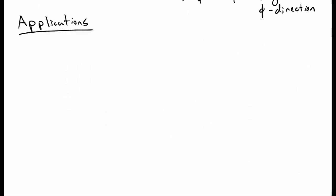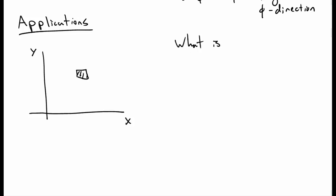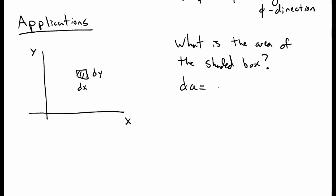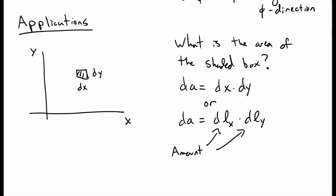Let's apply this to an example to see why you would care about such a thing. Consider the area of this small infinitesimally small shaded box. The area dA, if the box has height dy and length dx, is of course dx times dy. I'm going to write that as dl_x times dl_y — a little bit of length in the x direction and a little bit of length in the y direction. These are just the components of the infinitesimal displacement vector. It seems trivial in this case because it's Cartesian coordinates.